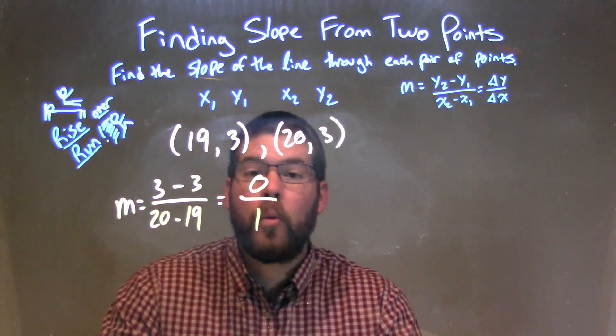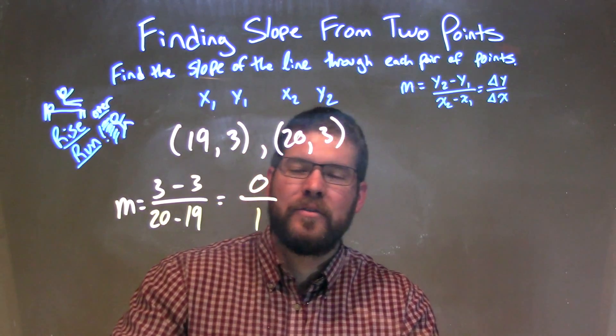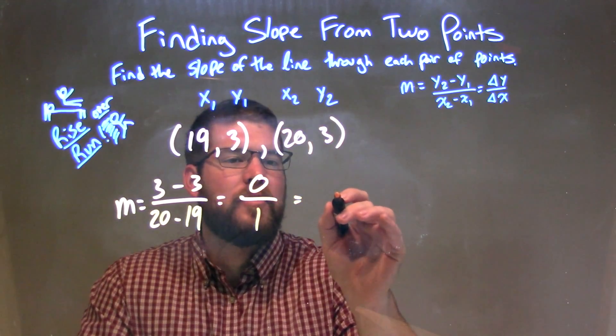Well, 0 divided by 1—be careful—we're allowed to do this. 0 divided by 1 is totally okay, and we have a slope of 0.